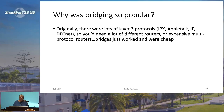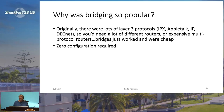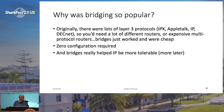So why was bridging so popular? Originally there were lots of layer three protocols — IPX, AppleTalk, IP, DECnet — and to interconnect nodes running these different protocols, you'd need lots of different routers, or multi-protocol routers that were super expensive and really slow. Bridges just worked and were cheap, and bridging was zero configuration — just plug it in. Some customers complained it was the most boring product Digital ever had. But the fact that we had bridges — why didn't they go away? Because bridges helped IP become more tolerable and let us live with IP longer.